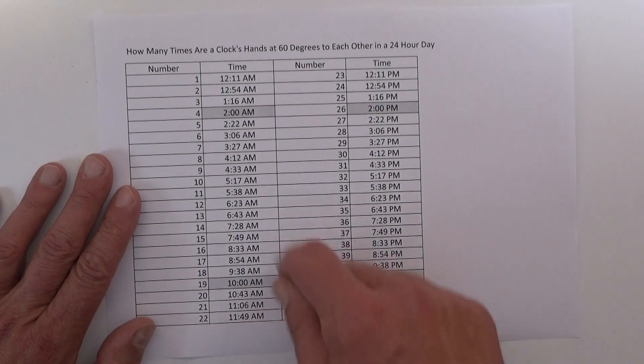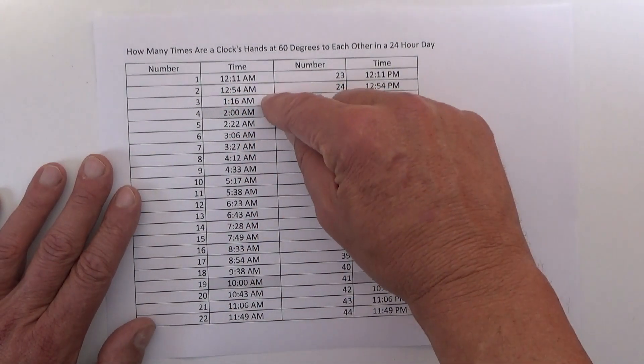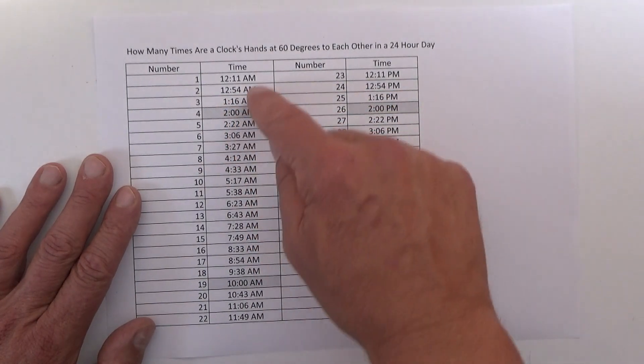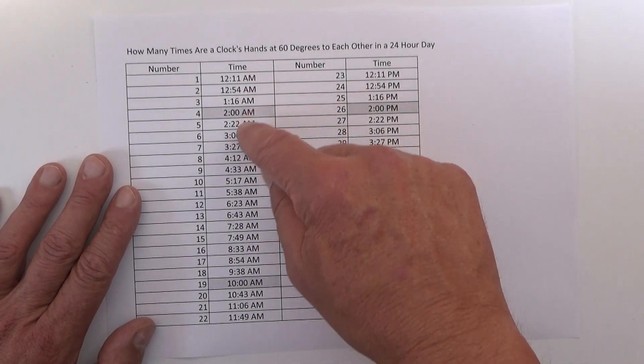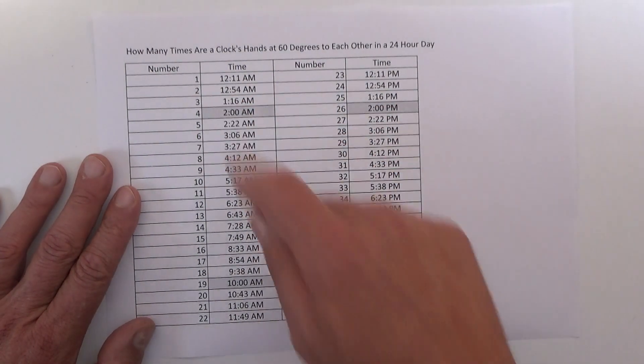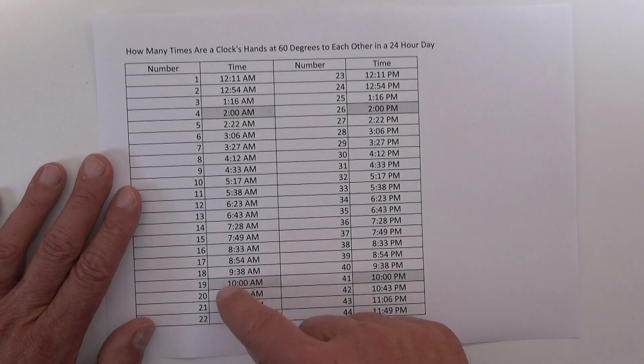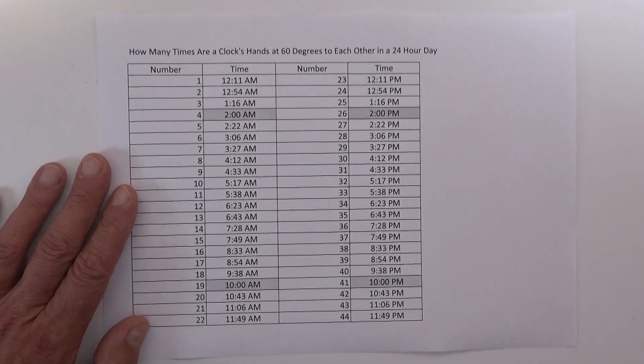You can see here that in the 1 o'clock range there's actually only one time that starts with 1. Two lots of 12s, two lots of 2s, 3s, 4s, but only one time that starts with 1. And down at the 9s you've only got one time that starts with 9. And then you've got 10 o'clock exactly, which also gives you a 60-degree angle.